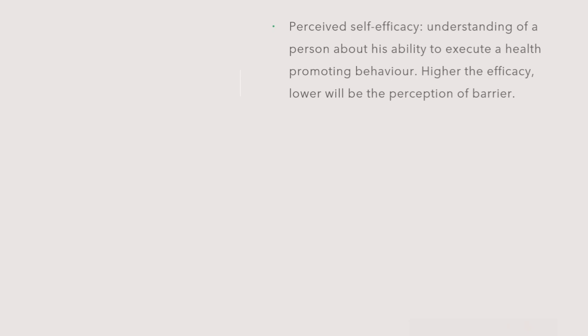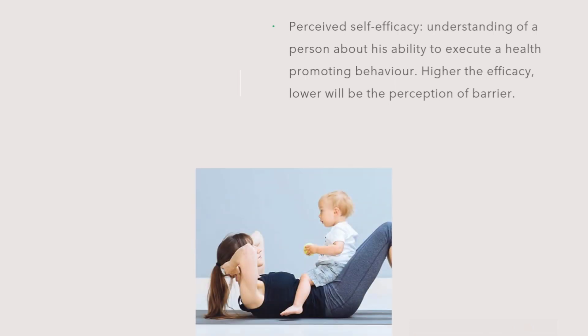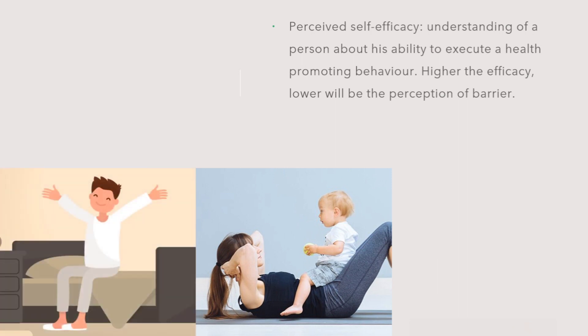Next is perceived self-efficacy, defined as the understanding of a person about his ability to execute a health-promoting behavior. It also influences the barriers — higher the efficacy, lower will be the perception of barrier. For example, when advised to exercise, the busy mother thinks how she can manage her schedule to make time for it. Or the one who has a hard time waking up early can think: it's okay, I can do the exercise in the evening, or I can develop the habit of waking up early. That is self-efficacy.